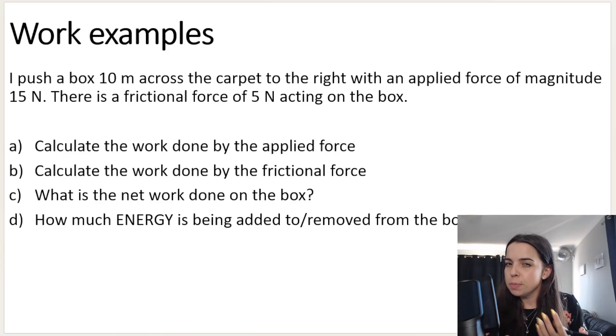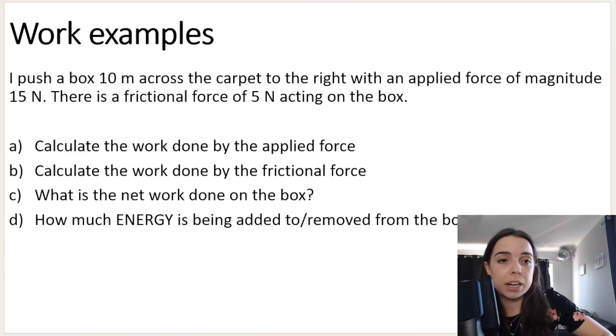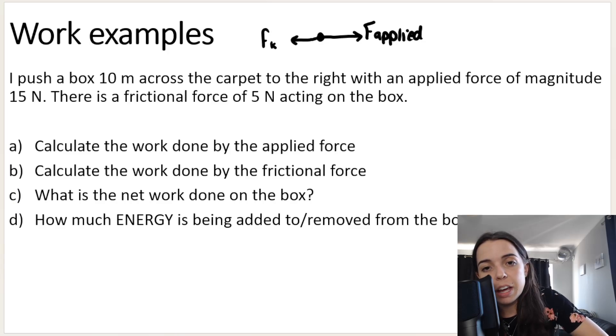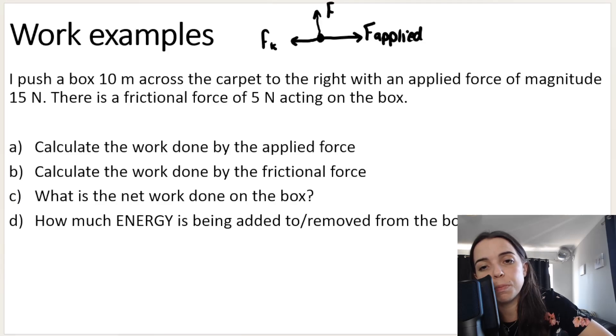Now the question doesn't ask me to draw a free body diagram, but I love drawing free body diagrams for situations just so I can visualize what is happening. So we've got an applied force going to the right with a magnitude of 50 newtons. We've got a frictional force. Friction always acts in the opposite direction of the motion, so if the box is moving to the right, friction acts to the left. Because it's on a surface, there's a normal force, and because the object has mass, there's a gravitational force, FG or W.